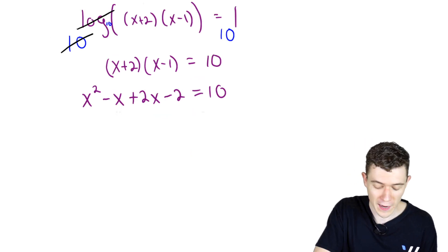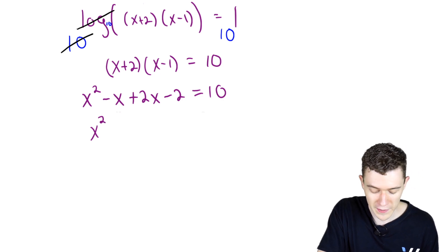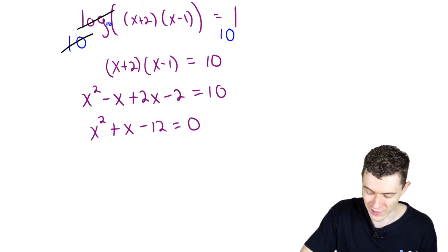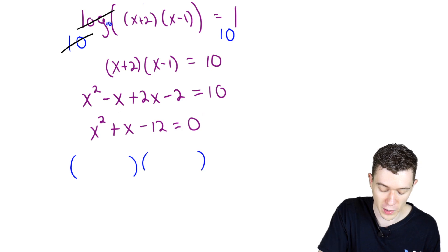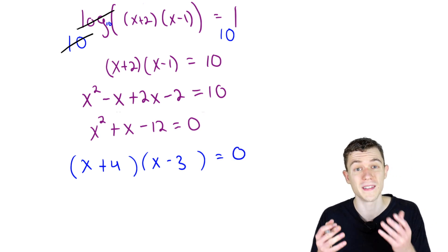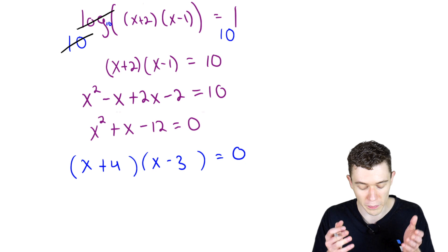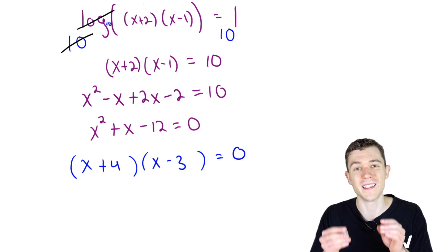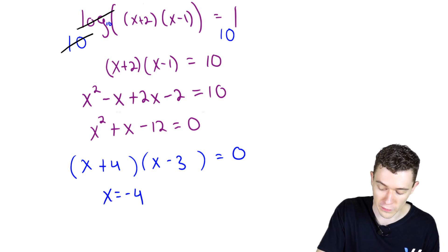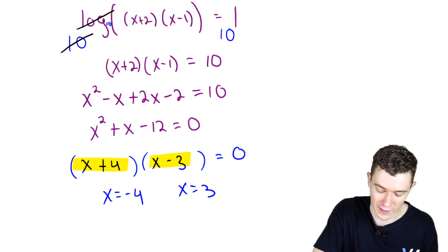Moving everything to the left-hand side and combining like terms, we'd have x squared. Minus x plus 2x is 1x. Minus 2 minus another 10 is minus 12. And now we can factor. Two numbers which multiply to negative 12 and add to positive 1, I think plus 4 minus 3 will do it. Their product, minus 4 times minus 3 is negative 12. Minus 3 plus 4 is 1. Now that we've factored this into linear equations, we can get our solutions. x equals negative 4 from this first linear factor and x equals positive 3 from this second linear factor.